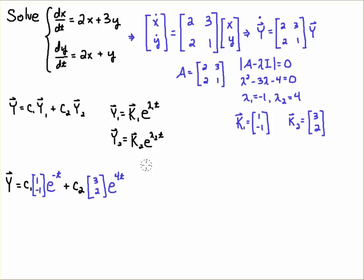Now, you have to consult with your instructor to see what form of the solution they want. Sometimes just writing something like this will be enough. And then you just put, you know, the 1, minus 1 here, e to the minus t, and then the 3, 2 here, and the e to the 4t. Sometimes they'll want the solution written this way.